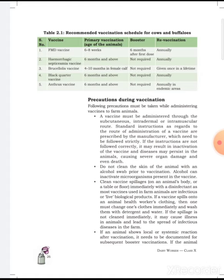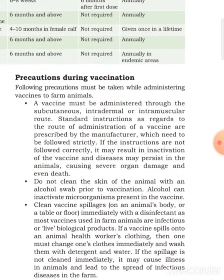Precautions: vaccines can be administered through the subcutaneous, intradermal, and intramuscular routes. The route of administration prescribed by the manufacturer must be followed strictly. If instructions are not followed, it may result in inactivation of the vaccine and the disease may persist in the animal causing severe damage.